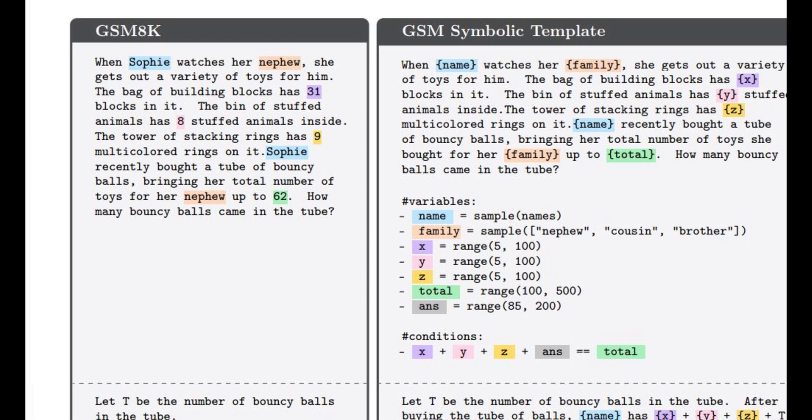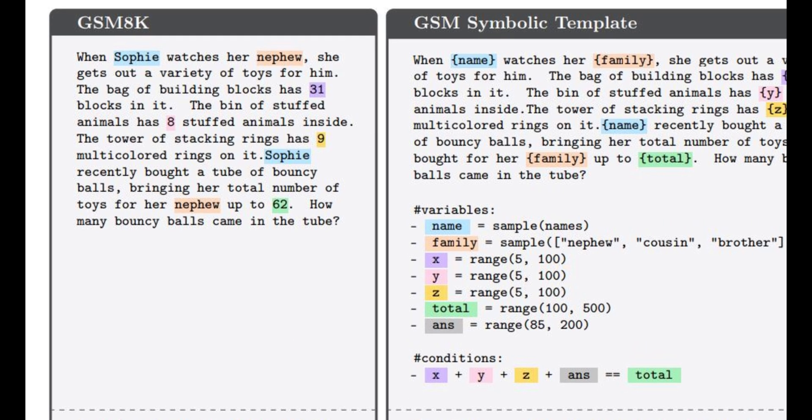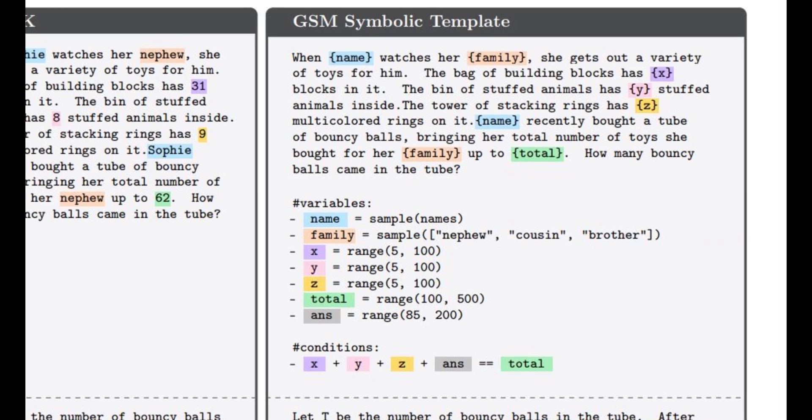As long as we've just changed the names and the numbers, not the actual problem itself. So essentially you can see right here shows image comparison. This is the GSM 8K on the left-hand side. We can see that the values that are going to be changed are located here. We can see Sophie, then a nephew. Then we can see 31, 8, 9, then Sophie, nephew, 62. So those are the only values that are going to be changed. And you can see right here that the GSM symbolic template, of course, the name, it has the family, the total, and you can see it changes these within a certain range. And this is how the template is constructed. Now, it's important that you understand that all they've done is just change the names and the values.